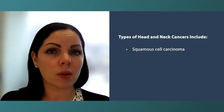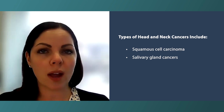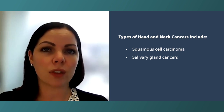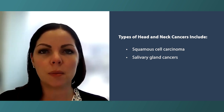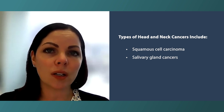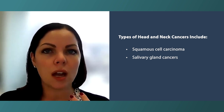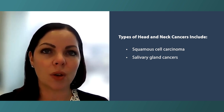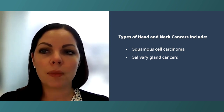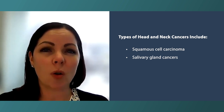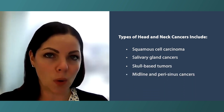Head and neck cancer can also include salivary gland cancers, of which there are dozens of different recognized histologies. These are cancers of the larger major salivary glands like the parotid glands or the submandibular glands, but they can also include cancers of minor salivary glands found all over the upper aerodigestive mucosa. Head and neck cancers can also include skull base tumors or midline sinus and parasinus cancers as well.